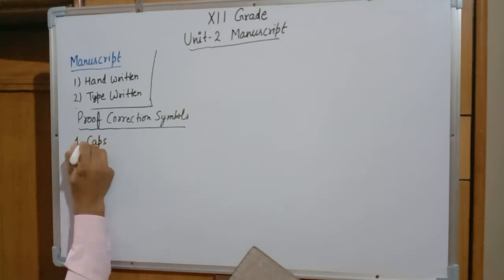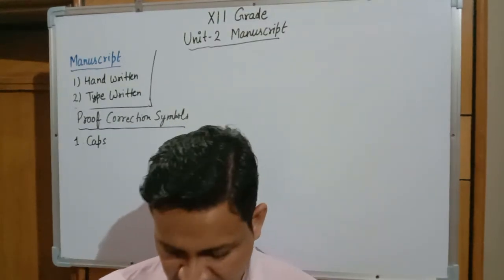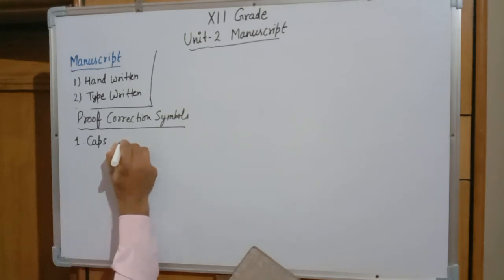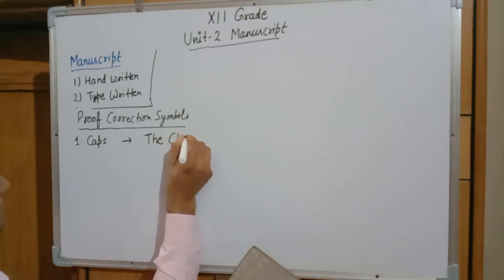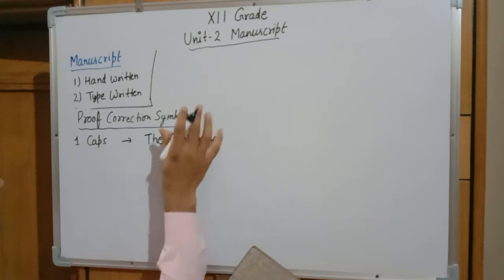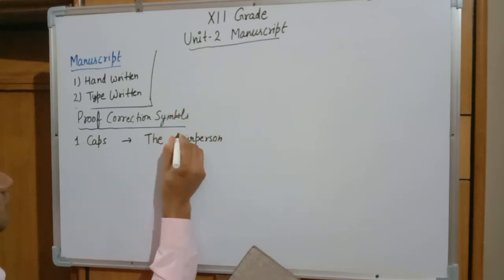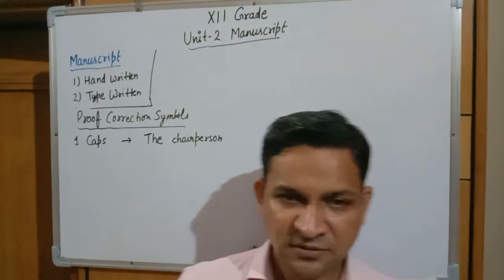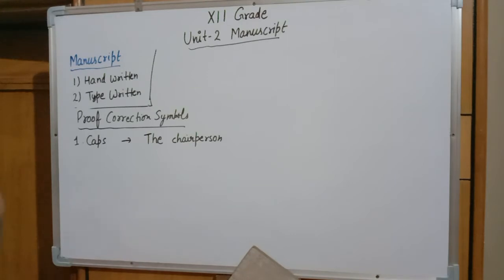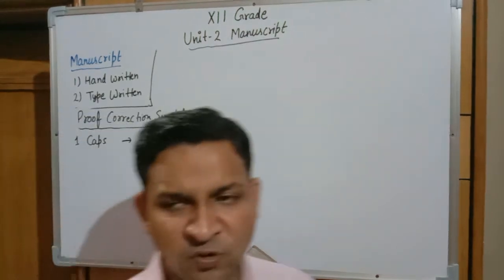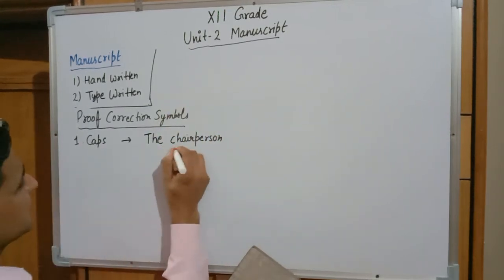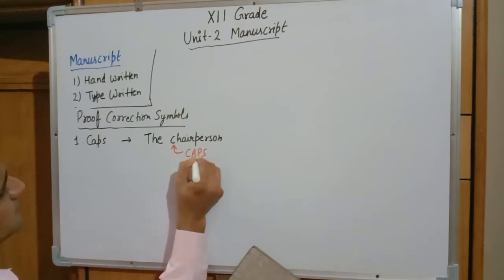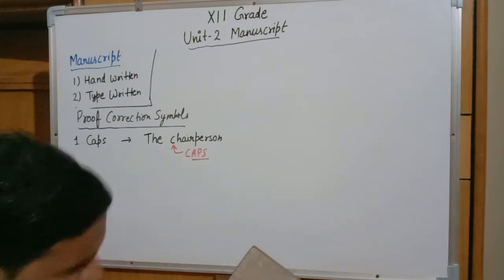CAPS is used when you need to write a capital letter but the letter is not properly capitalized. For example, if I am writing 'the chairperson' with a small 'c' — chairperson is a reputed person, the head of the department — so 'C' should always be written in caps. This is the CAPS proof correction sign; it means a caps error is present.